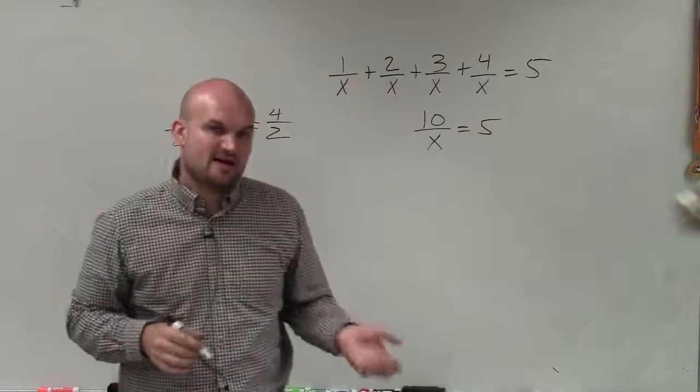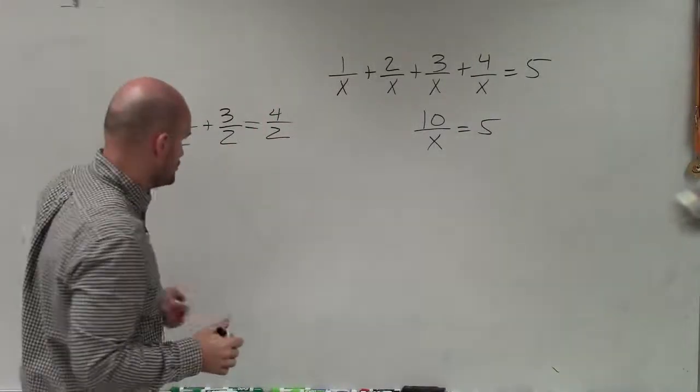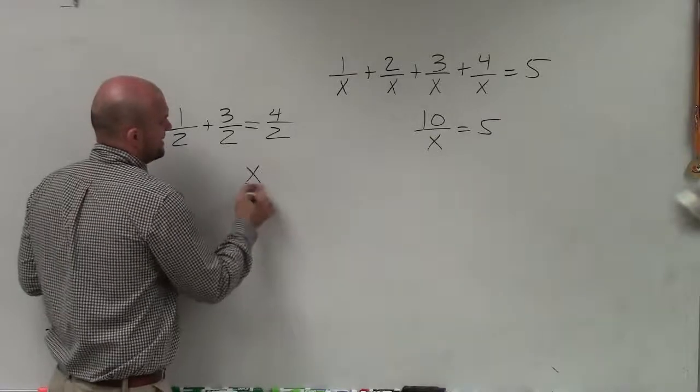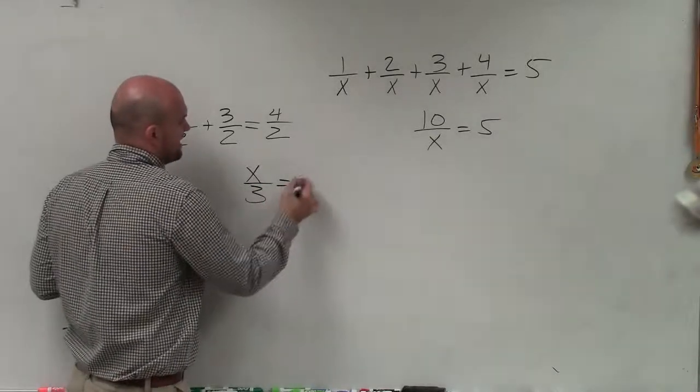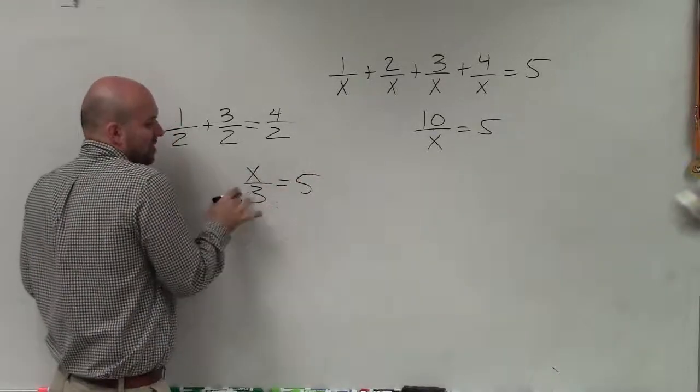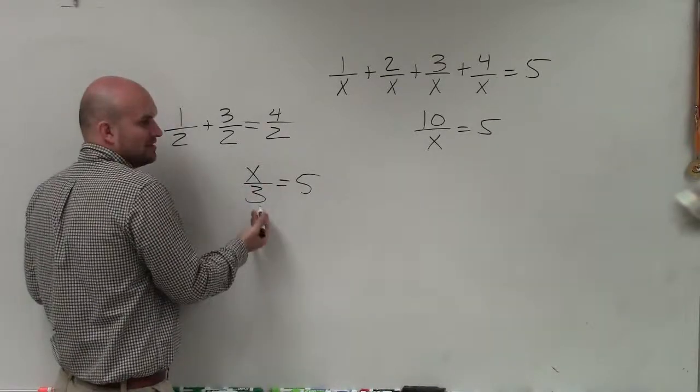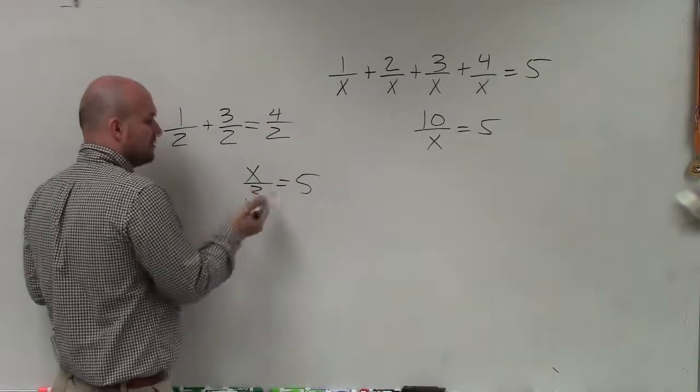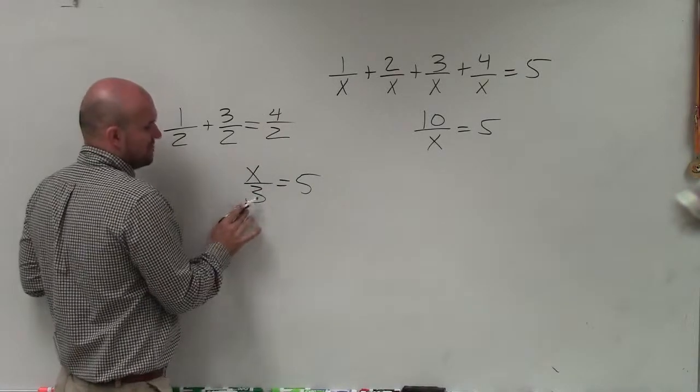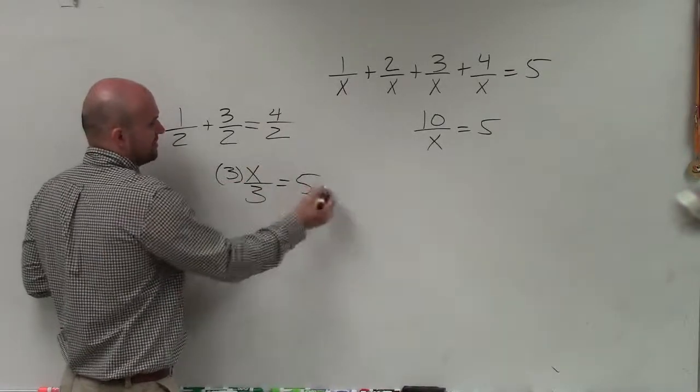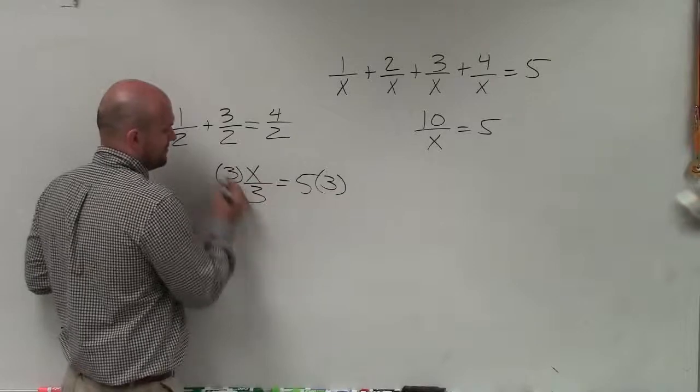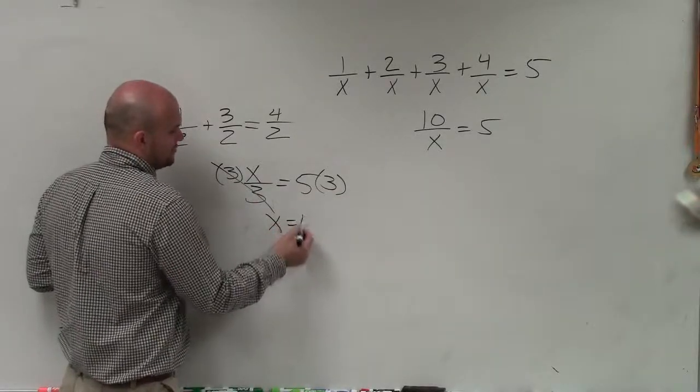Now again, we're asking for what is the value of x that makes this equation true. So if I had x over 3 equals 5 and I wanted to solve for x, I have to undo. I can't solve for x when it's in the denominator or with the fraction. So I've got to get rid of this fraction. Well, I notice my variable is being divided by 3. So to undo divided by 3, I have to multiply by 3. Therefore, I get x equals 15.